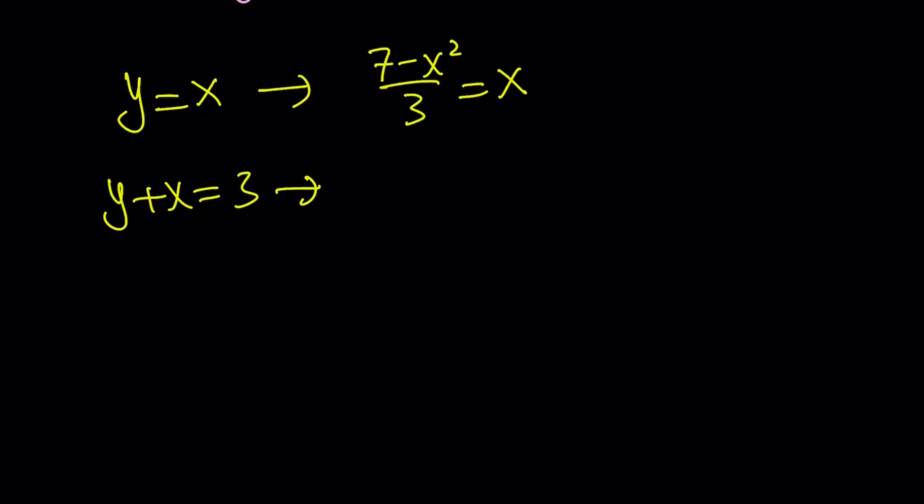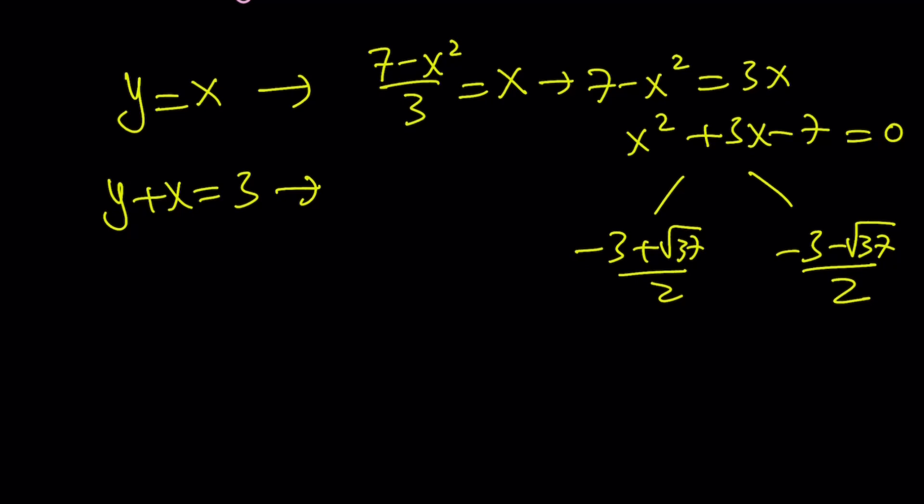So now you get this equation. And then guess what? Cross multiply. Put everything on the same side. And voila. You get the same equation that we got before when we did the first method. And this equation has two solutions: negative 3 plus root 37 over 2, and negative 3 minus root 37 over 2.